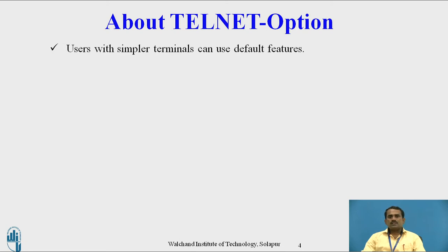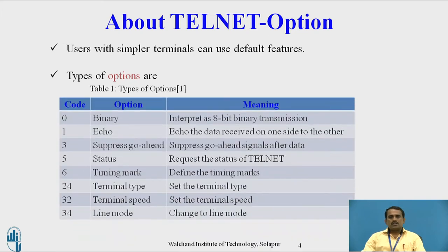Users with simpler terminals can use default features. There are many options we have to use while transmitting data from one user to another. This table contains some of the options with their code, option name, and meaning. The code 0 option is binary, used to interpret 8-bit binary transmission. Code 1 is echo, which echoes data issued on one side to the other.